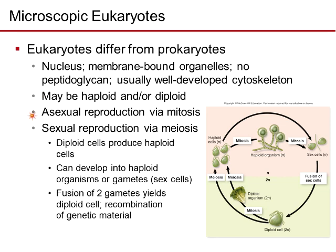Eukaryotes also have asexual reproduction via mitosis and sexual reproduction via meiosis. The diploid cells produce haploid cells, which are the sexual cells. Female and male organisms produce these haploid cells, which are then joined to become a new organism. The fusion of two gametes yields a diploid cell and the recombination of genetic material. Some organisms do both sexual and asexual reproduction as part of their normal process.